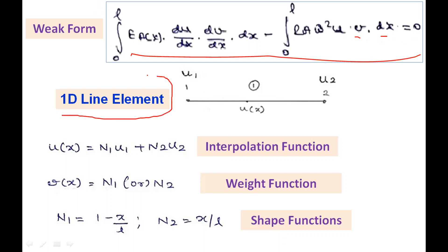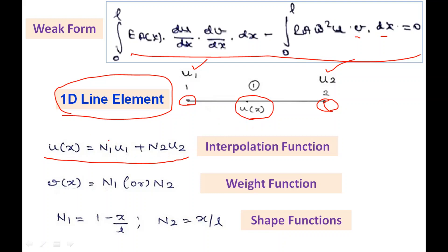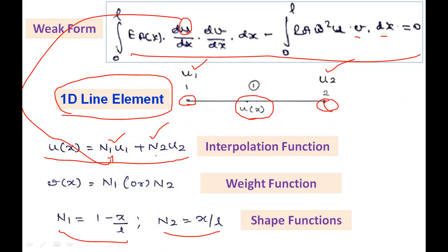Now we apply the one-dimensional line element to solve this problem. The line element is a straight line with two end nodes 1 and 2, with degrees of freedom u1 and u2, representing displacement along the x direction. The field variable is interpolated as u(x) = N1·u1 + N2·u2, where N1 and N2 are shape functions. In the local coordinate system, N1 = 1 − x/l and N2 = x/l.